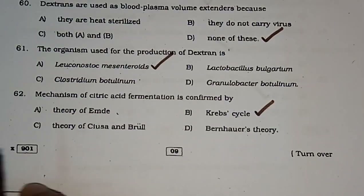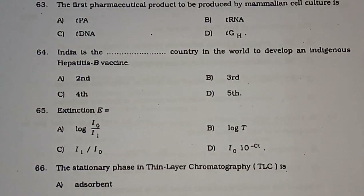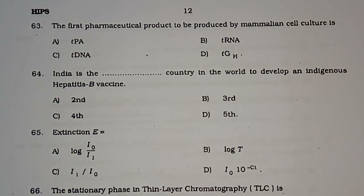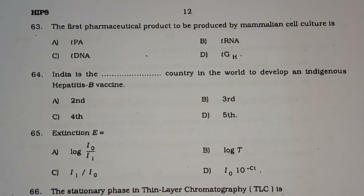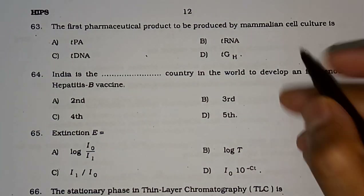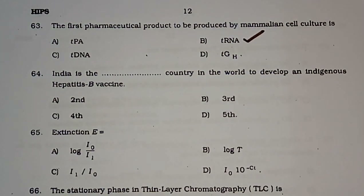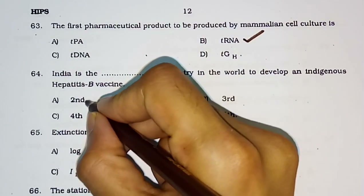Question number 62: The mechanism of citric acid fermentation is confirmed by — various theories including the Krebs cycle theory and Seosa and Bernard's theory. The correct answer is the Krebs cycle. Question number 63: The first pharmaceutical product to be produced by mammalian cell culture is — TPA, tRNA, TDN, or TGH. The correct answer is option B — tRNA.